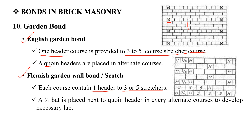In the Flemish garden wall bond, we put a header in a three-quarter head arrangement, with headers placed every three stretchers in the course pattern.